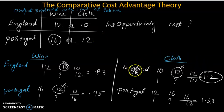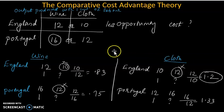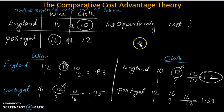So England is producing cloth — England chooses cloth as its commodity. Each country will choose a commodity based on where it has comparative advantage. This is the theory.